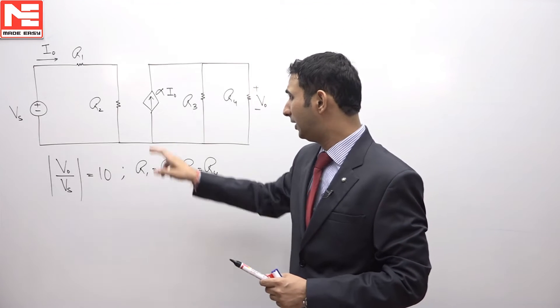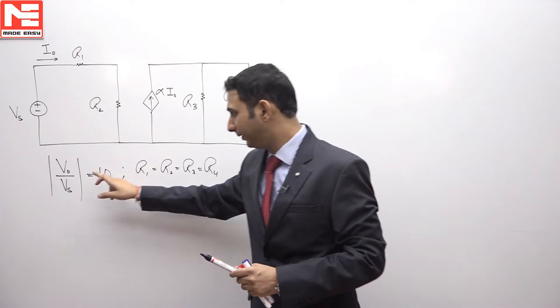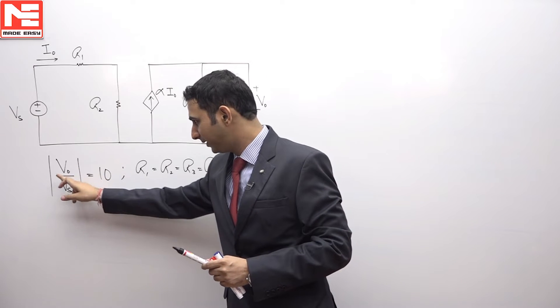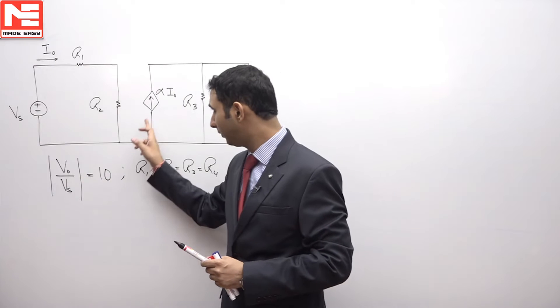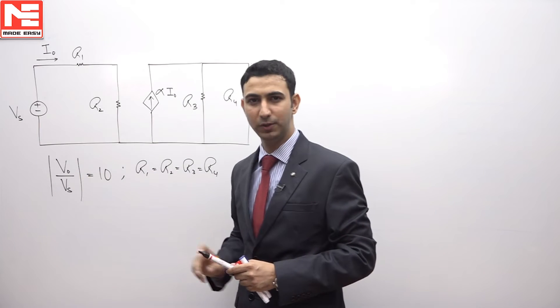In this question, we have to find the value of alpha for which the ratio of V output upon Vs, its magnitude becomes equal to 10. So we have to find at what value of alpha V naught by Vs becomes equal to 10.